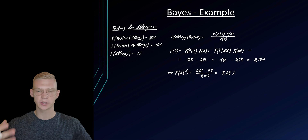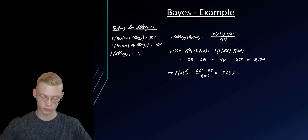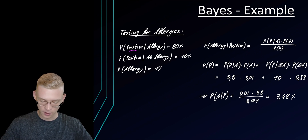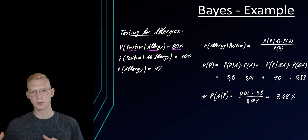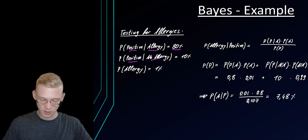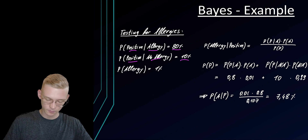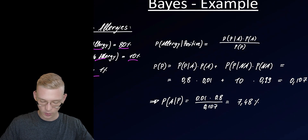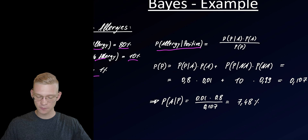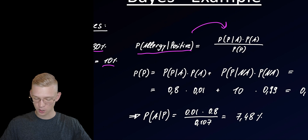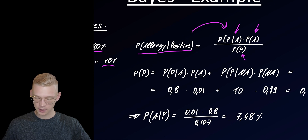Now a short example to understand how we can use Bayes' rule. Let's say we're testing for allergies. We have a test that is positive if we have an allergy 80% of the time. Sometimes it gives a positive result even though we have no allergies — that is 10%. The probability of having allergies in general is 1%. We are interested in: what is the probability of having an allergy if the test is positive? We can just use Bayes' rule: the probability of a positive test given an allergy, times the probability of an allergy, divided by the probability of the test being positive.